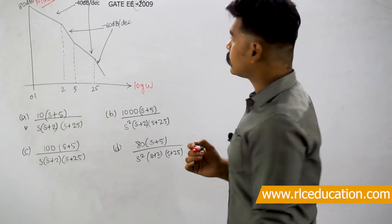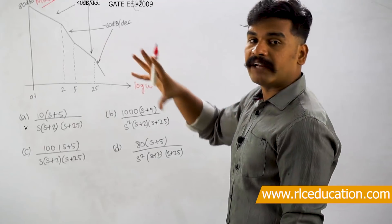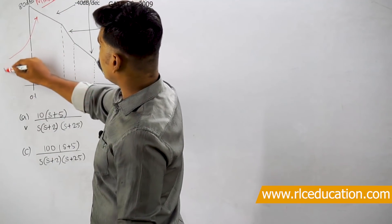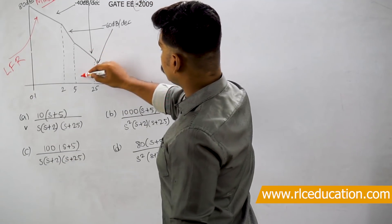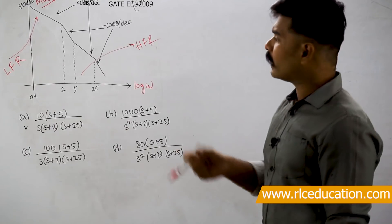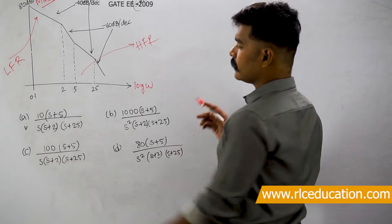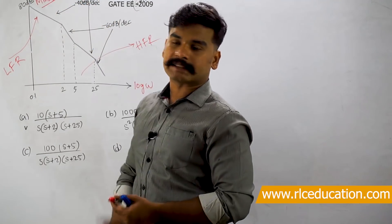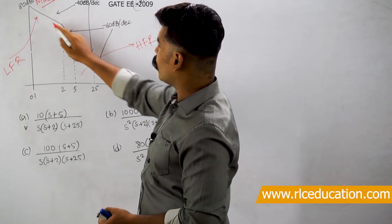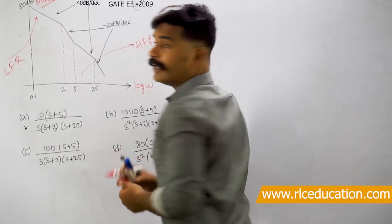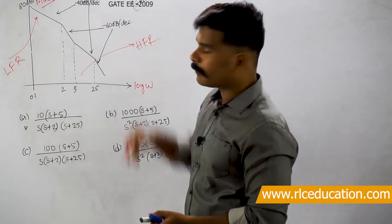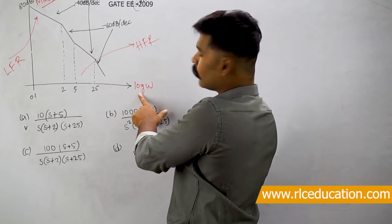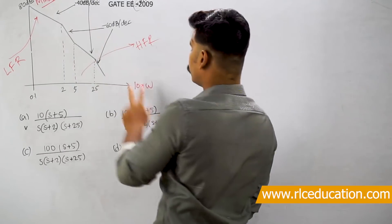Now observe how the plot starts with respect to the y-axis. You see that the magnitude started falling down from the y-axis itself with some slope. The slope of that magnitude plot is y divided by x — that is, magnitude divided by log omega. This means the slope is the fall in magnitude with respect to log omega.